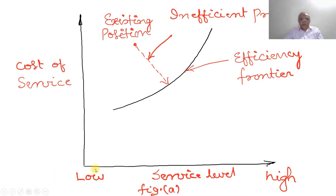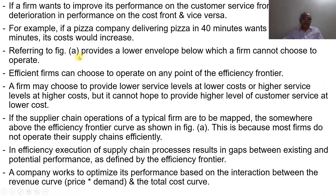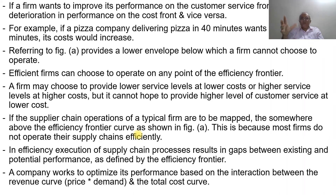To reduce transportation time from 40 to 20 minutes, there must be a change in transportation mode, so the cost involved will be higher. The efficiency frontier provides a lower envelope below which a firm cannot choose to operate.